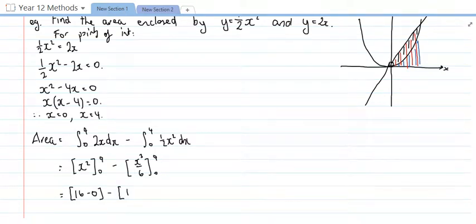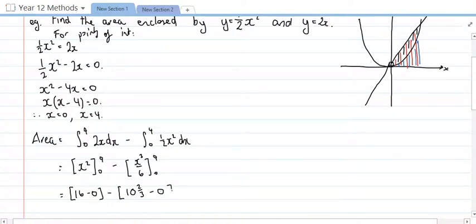I just ran out of time on the video. As I was saying, the value that we get when we sub the 4 into here is we get 64 divided by 6, which is 10 and 2 thirds. And then subbing 0 in, we're going to have 0 again. So what we are left with is 16 minus 10 and 2 thirds, which is just 5 and 1 third, and I'm going to write that as 16 over 3. And that's an area which is measured in square units.